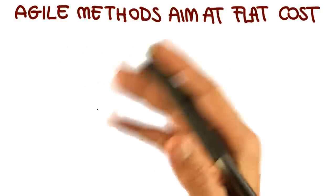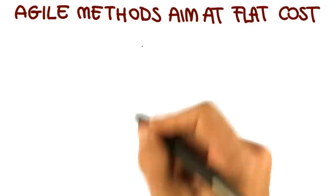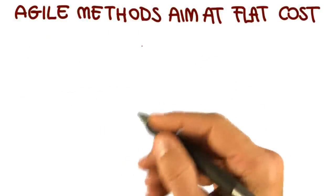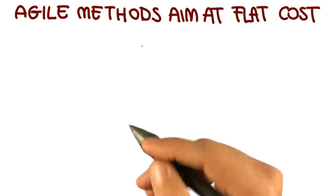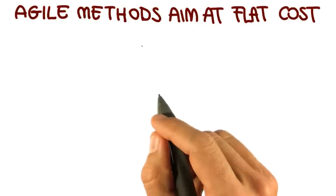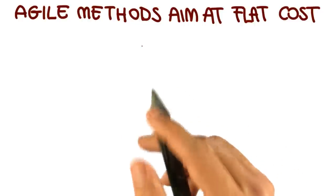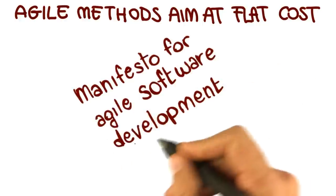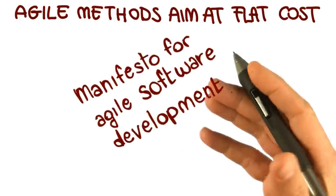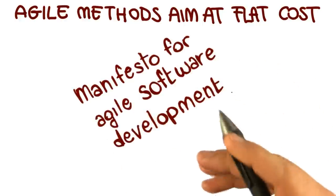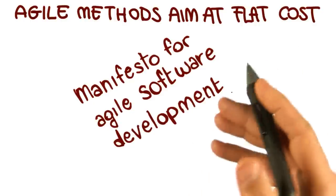This and other considerations led to the birth of agile software development. Specifically, for those of you who are interested in a little bit of history, in February 2001, a group of software developers, 17 of them, met to discuss lightweight development methods and published the manifesto for agile software development, which introduces and defines the concept of agile software development or agile methods.